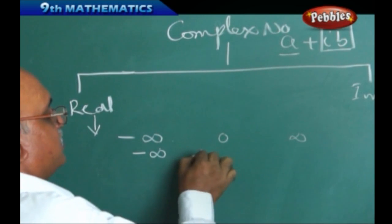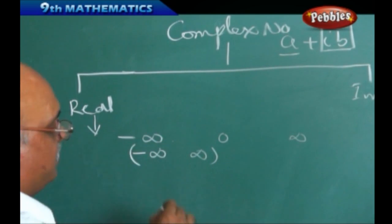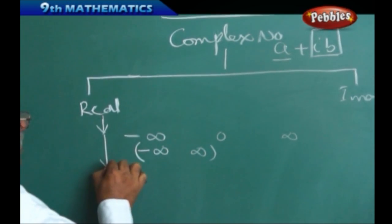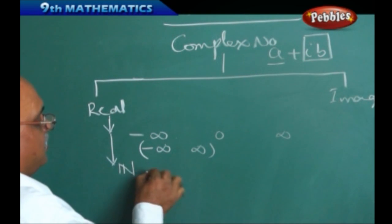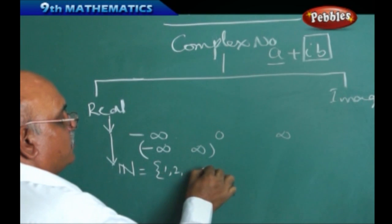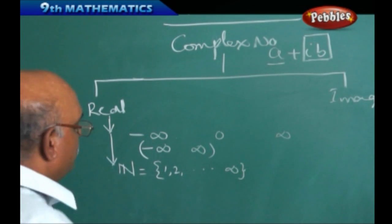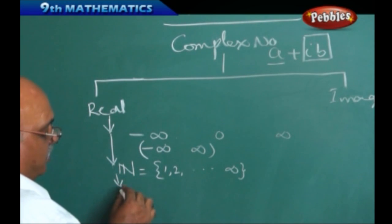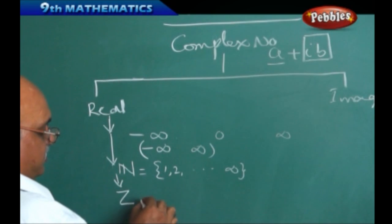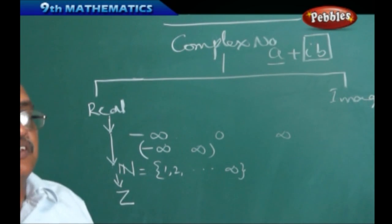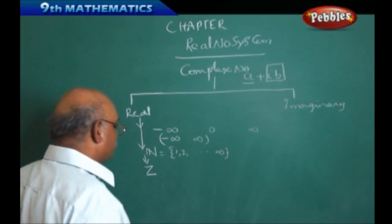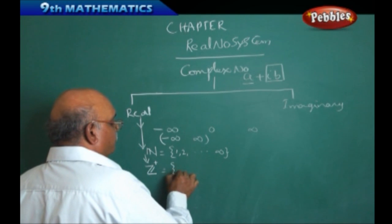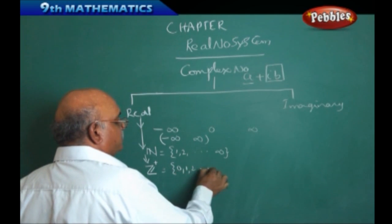The extended real number system can be expressed from minus infinity to plus infinity. Real numbers can be divided into parts. The first part is natural numbers, starting from 1, 2, 3 and so on up to infinity. Natural numbers are also called countable numbers. From natural numbers, we also have integers. Positive integers, denoted z-plus, can be expressed as 0, 1, 2 and so on up to infinity.